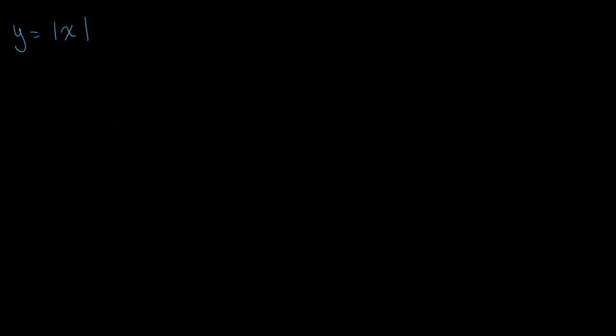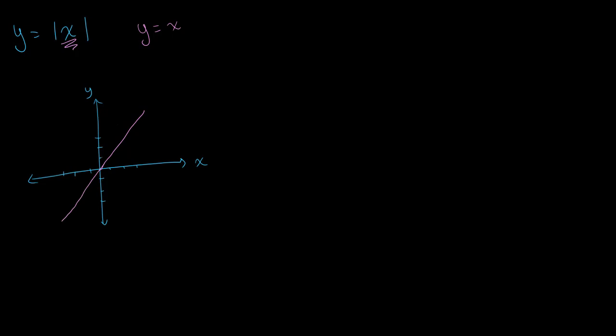Here we have a basic example: the function y is equal to the absolute value of x, which means y equals the magnitude of x without regard to sign. Let's draw our axes and label them. Whenever you're drawing the graph of a modulus function, the first step is to draw the graph without regard to modulus — that means drawing y equals x, which is just a straight line through the origin.